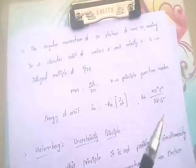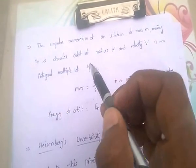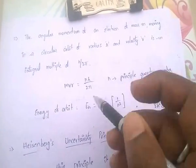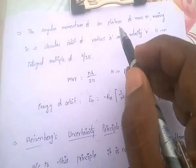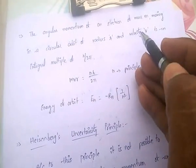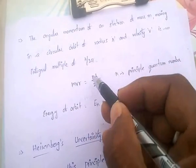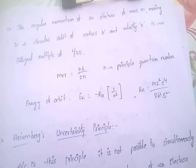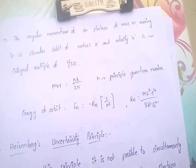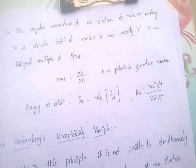The angular momentum of an electron of mass m, moving in a circular orbit with radius r and velocity v, is an integral multiple of h/2π. That is, mvr = nh/2π. Here, n is nothing but the principal quantum number, and h is Planck's constant.